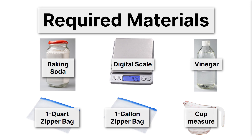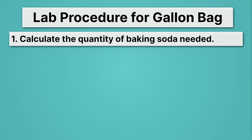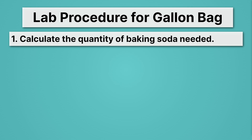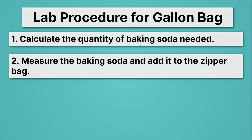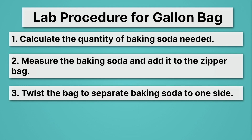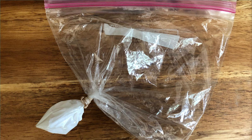What will we do with all of these materials? That's our lab procedure. First, we'll calculate the quantity of baking soda needed — we'll go over that in full detail in just a second. We'll work through it together for the gallon Ziploc bag, and then you'll have the responsibility of doing it for the quart zipper bag. Step two: measure the baking soda and add it to the zipper bag. We want to carefully add the vinegar without starting the reaction before we zip it shut, so step three is to twist the bag to separate the baking soda to one side.